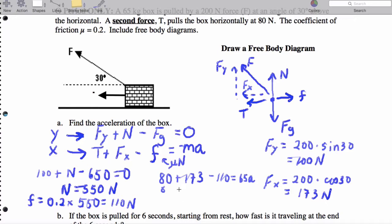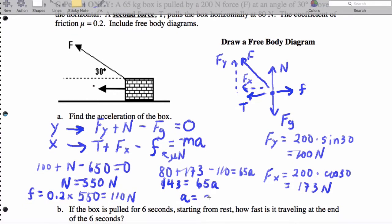So, when we actually work out the left side, 80 plus 173 minus 110 is 143. So, when we solve, we're going to get an acceleration of 2.2 meters per second squared.